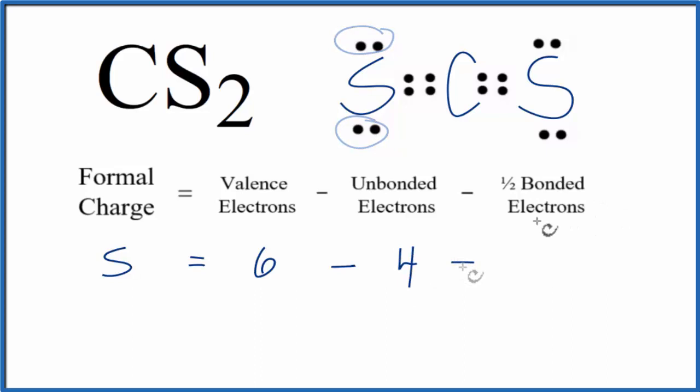And then we'll subtract 1 half of the bonded valence electrons. So we have 2, 4 of those for the sulfur. So 6 minus 4 is 2, minus 2, that equals 0. So the formal charge on the sulfur here is 0. And since these are identical, this sulfur is going to be 0 as well.